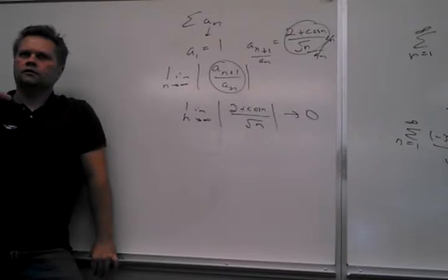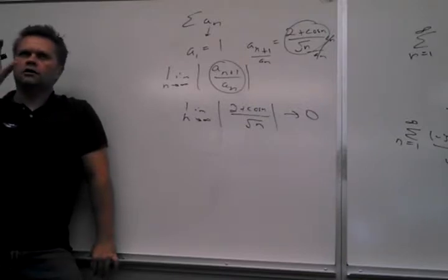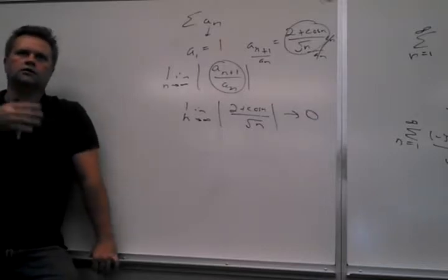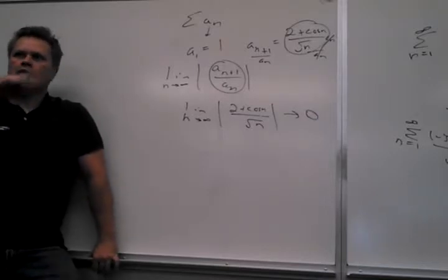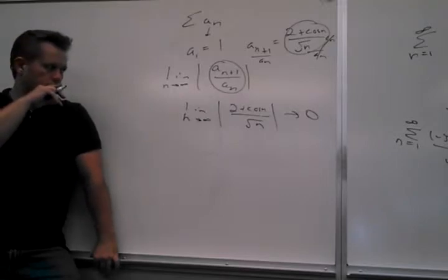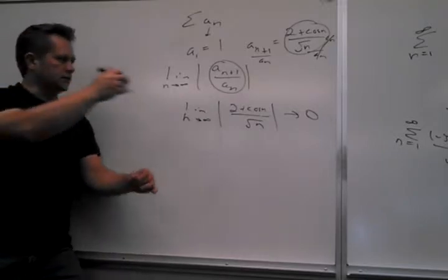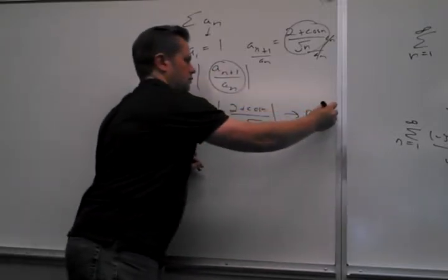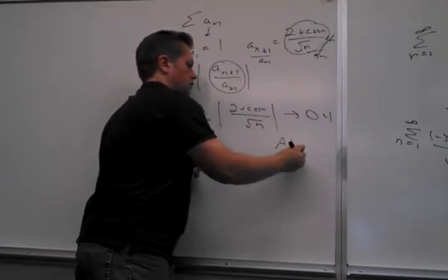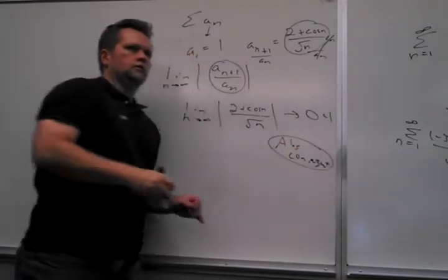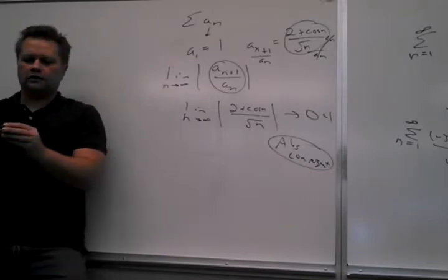So this whole thing can be replaced with that. A_{n+1} divided by a_n is this business here. And of course this one you can kind of go insane with because of the cosine, but basically it's a number less than or equal to 3 divided by something going to infinity — this is definitely going to go to 0. The top is bounded and the bottom grows unbounded, so the whole thing is going to go to 0. The top can't keep up. So what does that mean? It's less than 1 — absolute convergence.